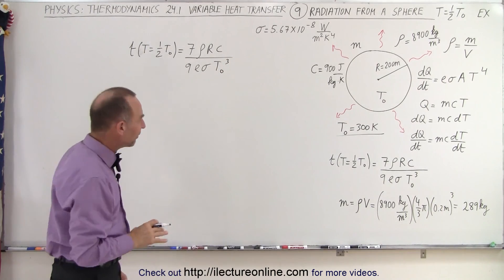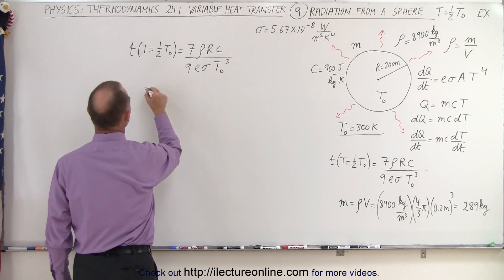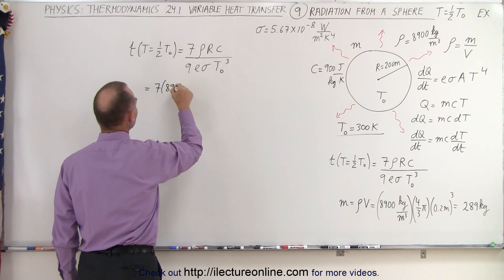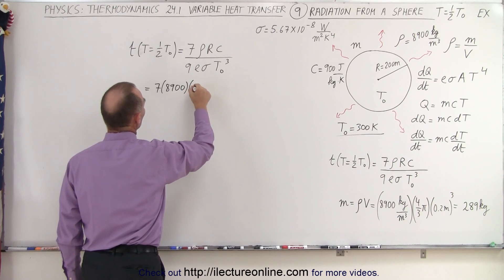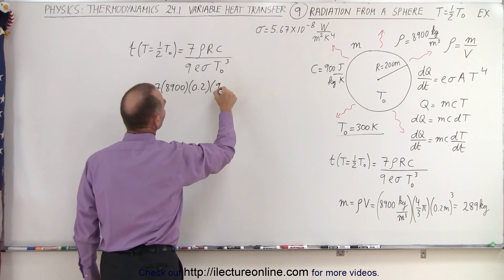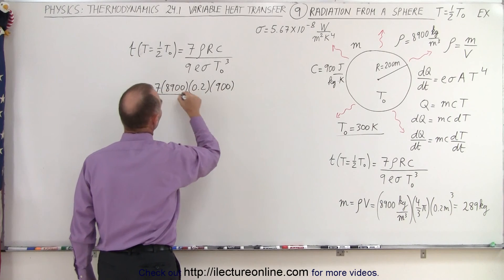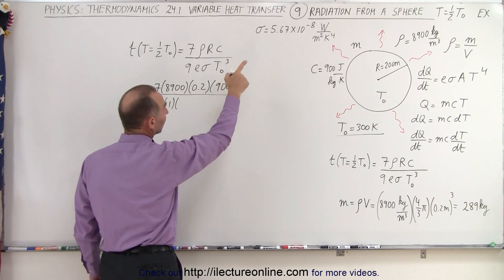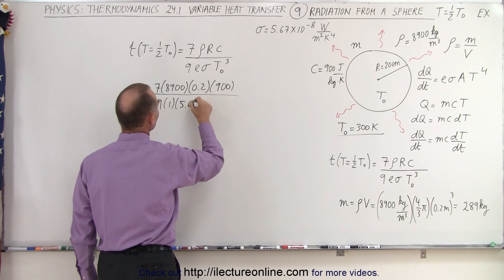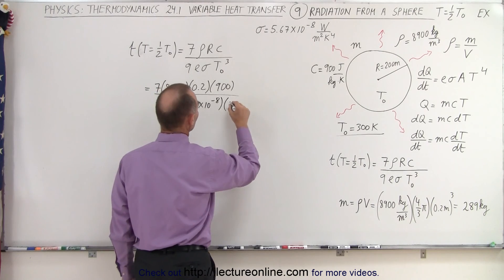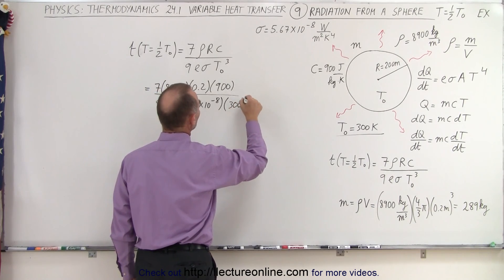So let's put in the values and see what we get. This is seven times — we'll leave out the units to keep it clean — 8,900, radius 0.2, specific heat 900, all divided by 9 times 1 times the Stefan-Boltzmann constant 5.67×10⁻⁸, and temperature to the third power, 300 cubed.